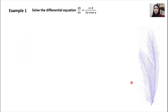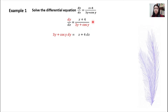Let's look at Example 1, which is a typical separable equation. You can move the 3y plus cos y to the left-hand side so that it is together with dy. And you can move dx to the right-hand side so that it is together with x plus 4. This means the left-hand side has only variable y with dy, and the right-hand side has only variable x with dx. Then you integrate both sides.